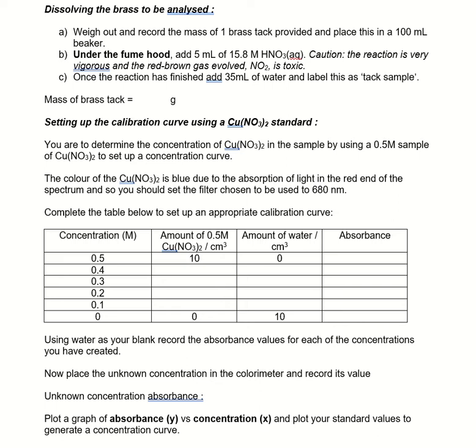So brass is a mixture of copper, zinc, sometimes some other materials. Copper reacts very readily with oxidizing agent. We're going to be using some concentrated nitric acid here and we'll form the copper nitrate with a nice strong colour. Zinc nitrate's colourless so we can ignore that.